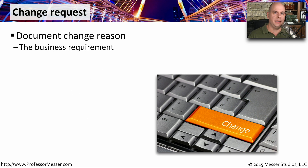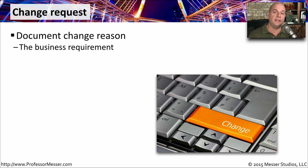The change control process usually starts with the request itself — what do you want to change? There's usually documentation that you would write up explaining the change you'd like to make and why you're doing that. The 'why' usually ties back to something relating to your organization's business or tasks, so you can apply this change to something that's really going to help the overall organization.